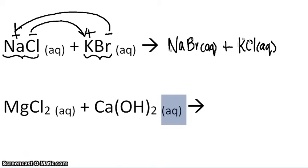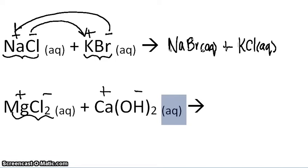On the next example, we have magnesium chloride and calcium hydroxide. In magnesium chloride, the positive charge goes over the first element, which is magnesium, and the minus charge goes over the anion. Calcium is the cation and hydroxide is the anion. The whole hydroxide molecule is the anion, and both chlorines are the anion as well.